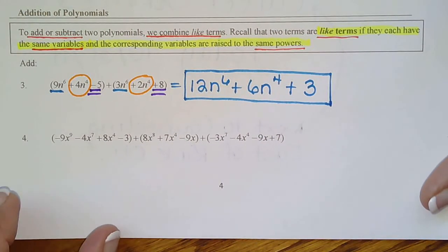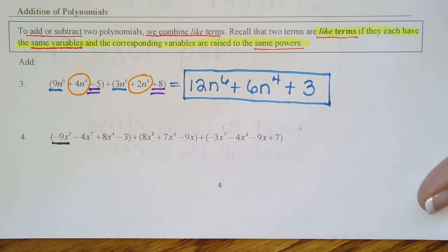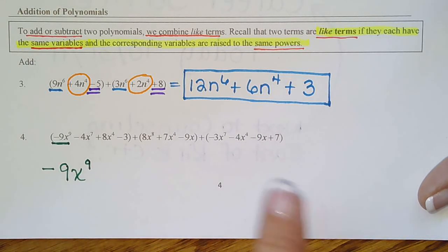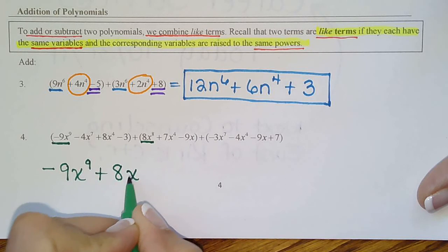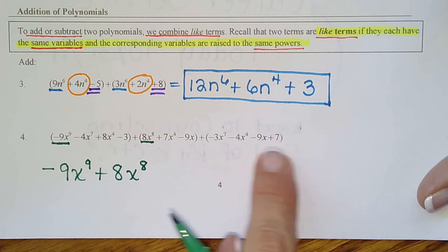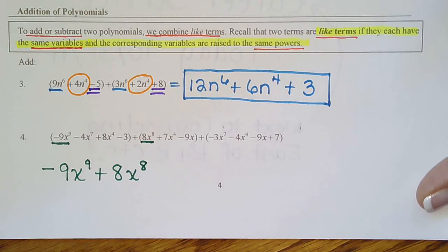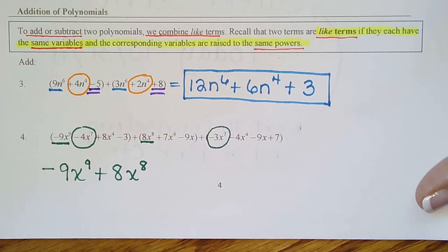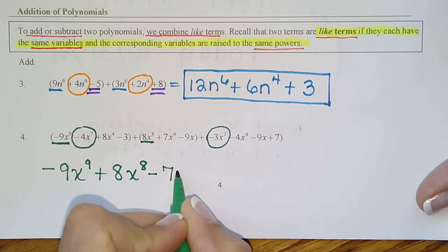The highest power is nine — is there any other x to the ninth? Nope, so negative nine x to the ninth comes straight down. Next highest is eight: positive eight x to the eighth, and there's no other x to the eighth term. Then for power seven, we have two terms: negative four x to the seventh and negative three x to the seventh, giving us negative seven x to the seventh.